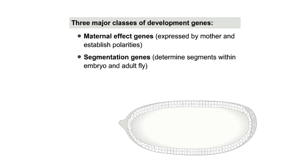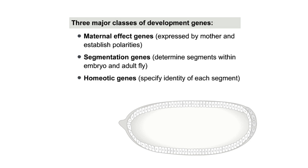Segmentation genes, which determine the segments within the embryo and fly. And homeotic genes, which specify the identity of each segment with respect to which body part develops at metamorphosis.